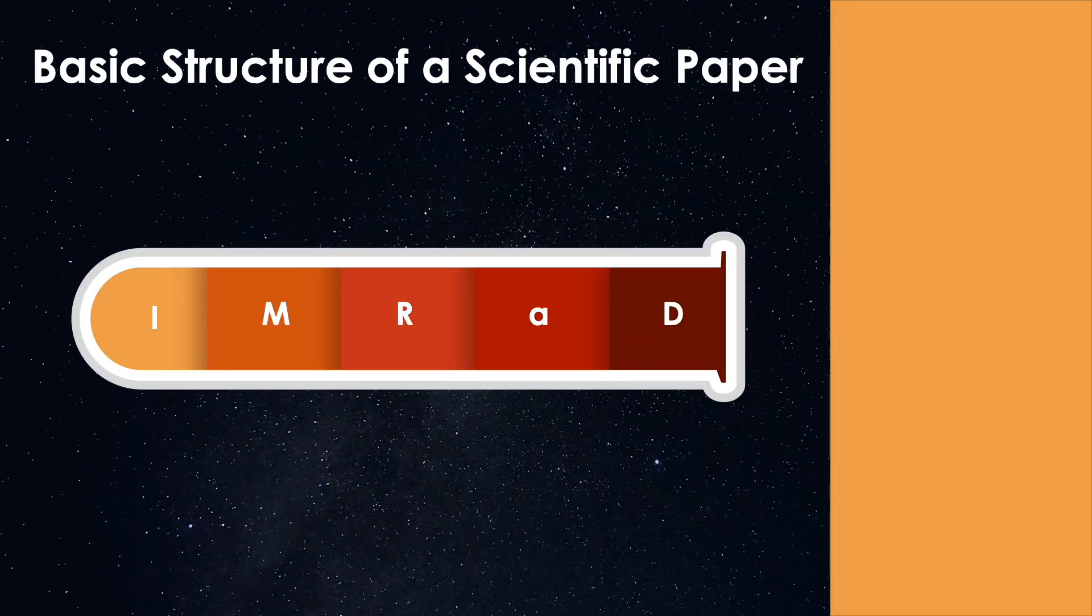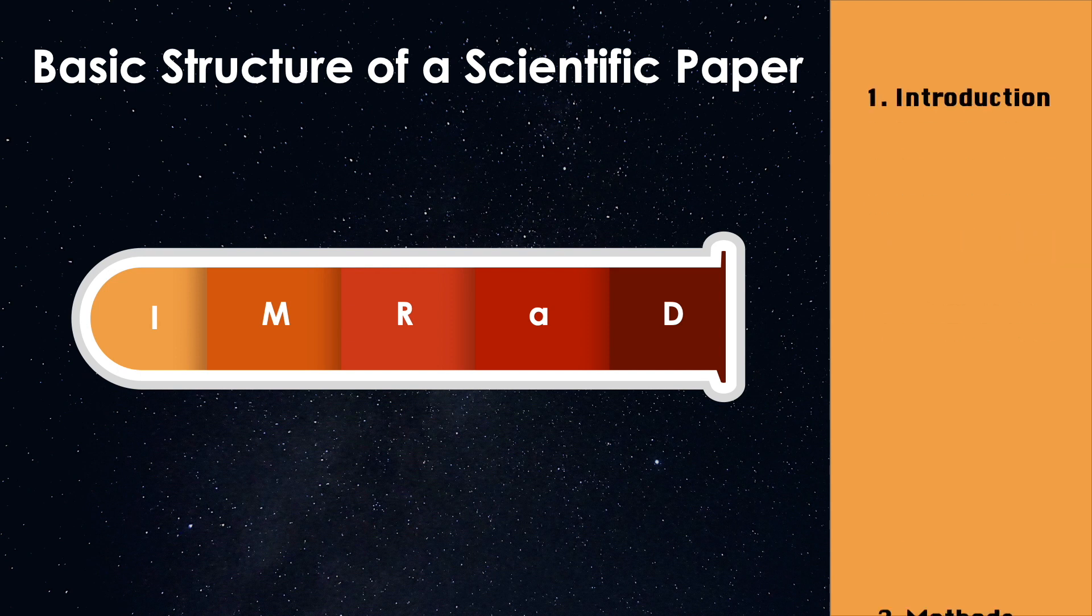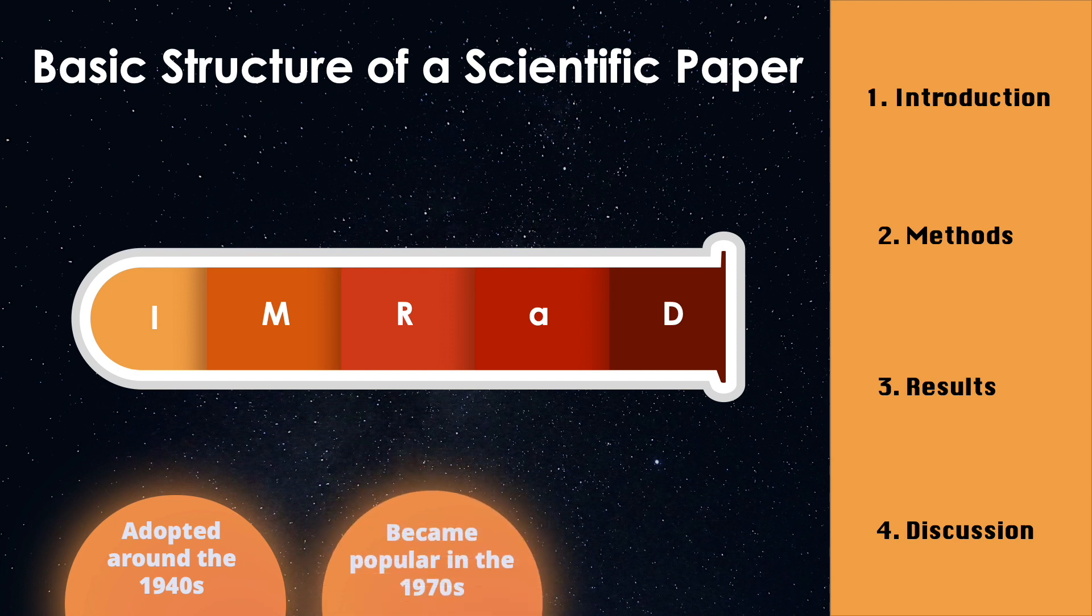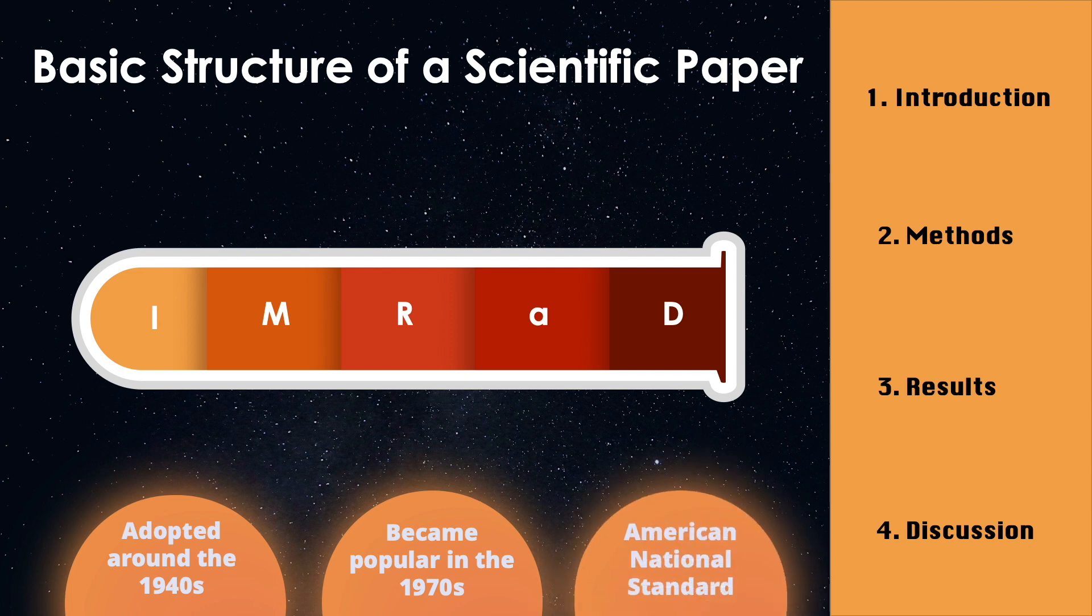Now we will look at the basic structure of a scientific paper. IMRAD is the standard organizational structure of a scientific paper, and it stands for Introduction, Methods, Results, and Discussion. It was introduced in the 1940s but only gained popularity in the 1970s after the publication of the ANSI standard on the preparation of scientific papers.